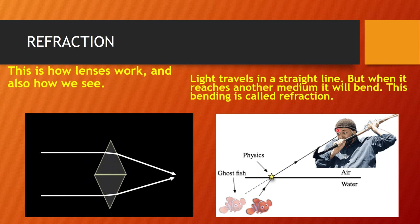A practical example: a man trying to catch a fish — the fish is actually at one location but light emerges from water to air and refraction occurs. Once it enters the human eye it appears the fish is at a different location. If this person aims in the apparent direction, he is going to miss it. This illustrates the practicality of refraction.